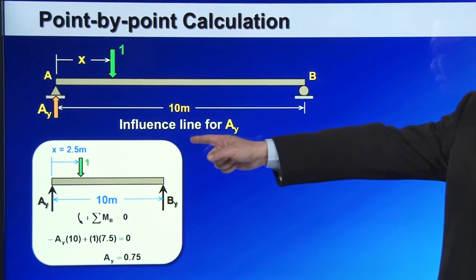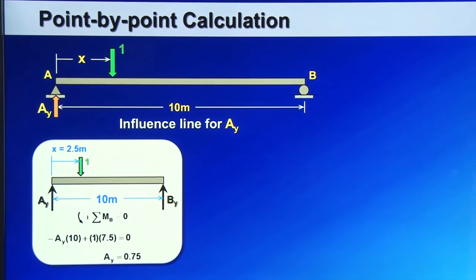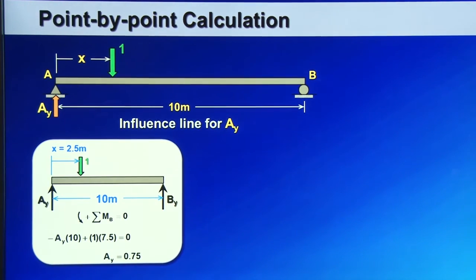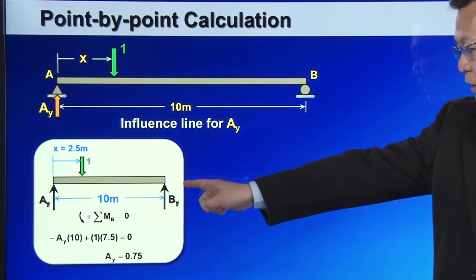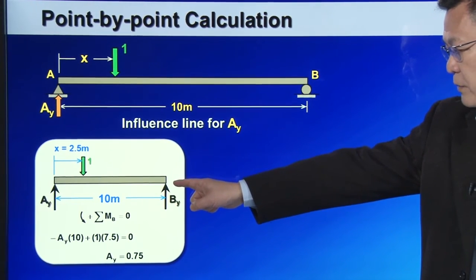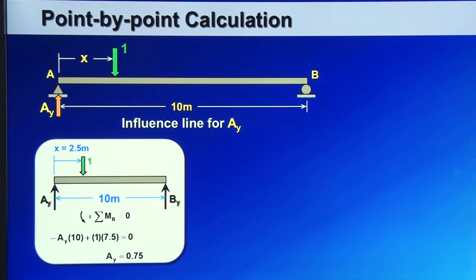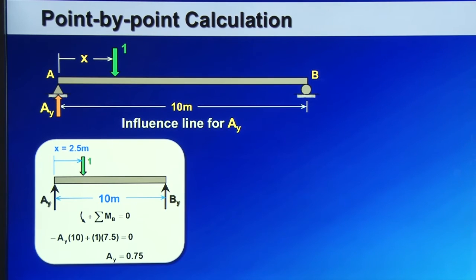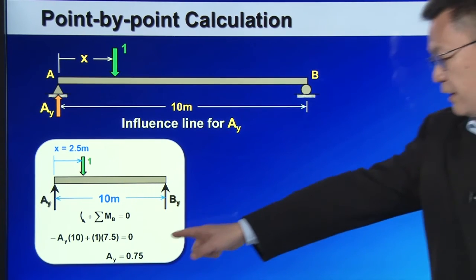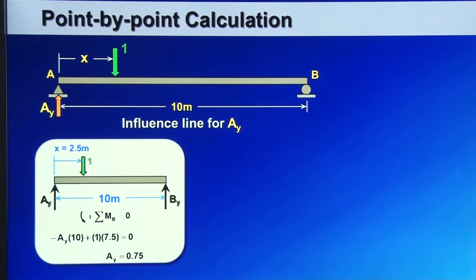So first you position the downward unit force at the location, measure 2.5 meters from the left end, and then perform equilibrium. In this case I do summation moment at point B, and set up this moment equilibrium equation, which then tells you that Ay should be equal to 0.75.